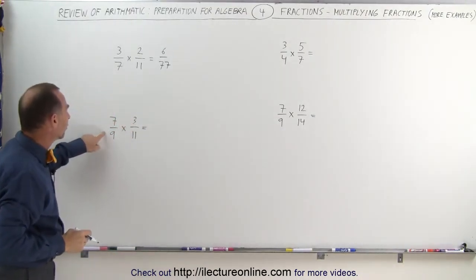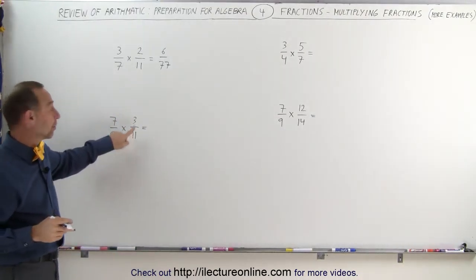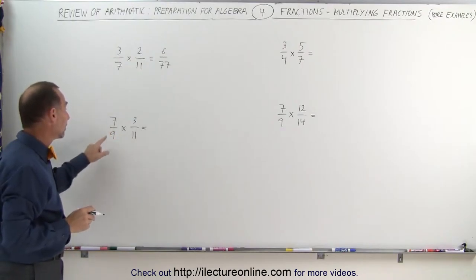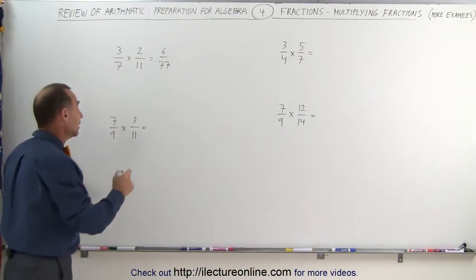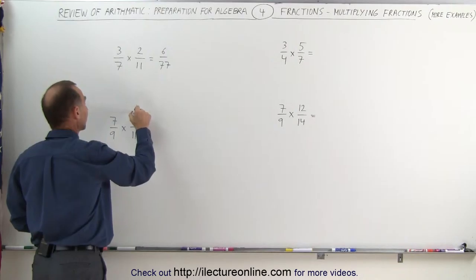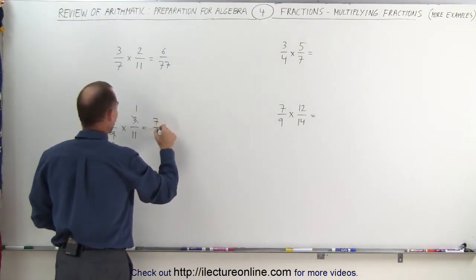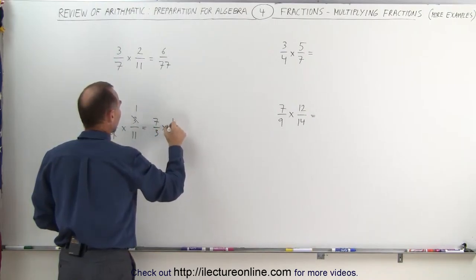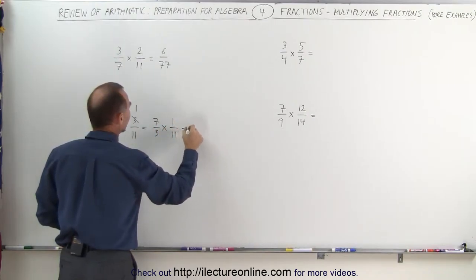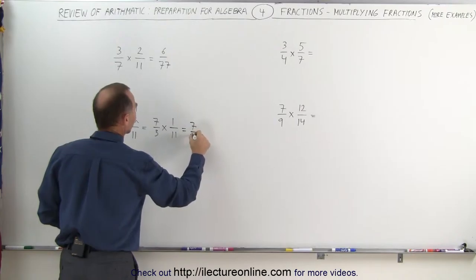Over here, 7 and 11 are prime numbers, but 3 and 9 are not. 3 and 9 are both divisible by 3, which means 3 divided by 3 is equal to 1, 9 divided by 3 is equal to 3. This leaves us with 7 thirds multiplied times 1 over 11, which is equal to 7 divided by 33.